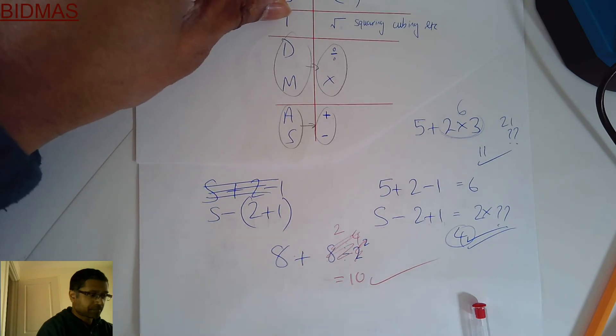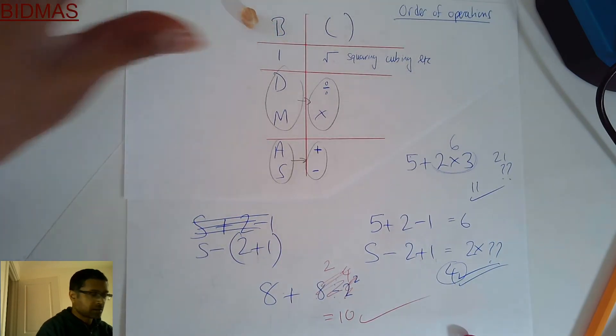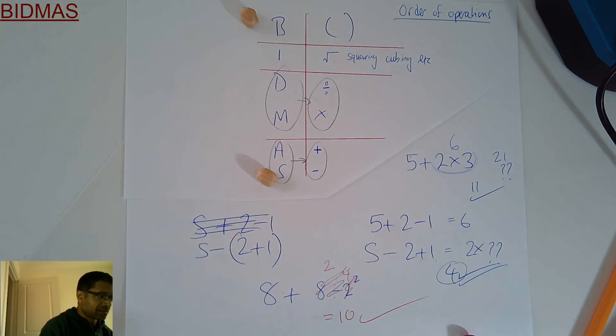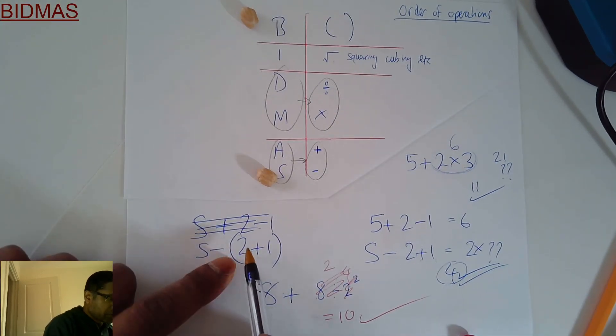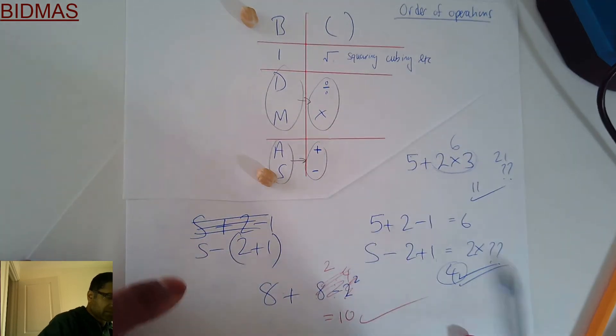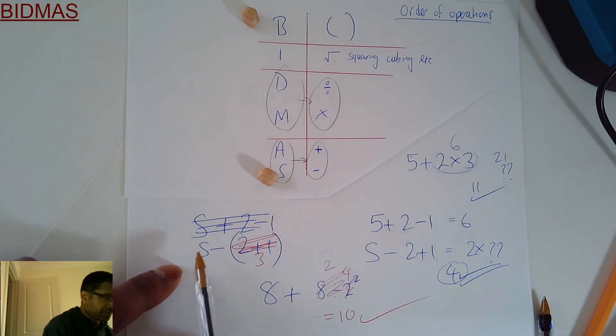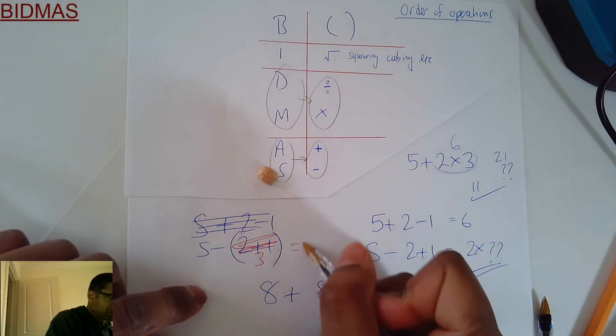So now what do we have? We got brackets, we got subtraction, right there on the opposite ends of the league. Brackets first. 2+1=3, so all of that becomes 3, and then 5-3 leaves you with 2.